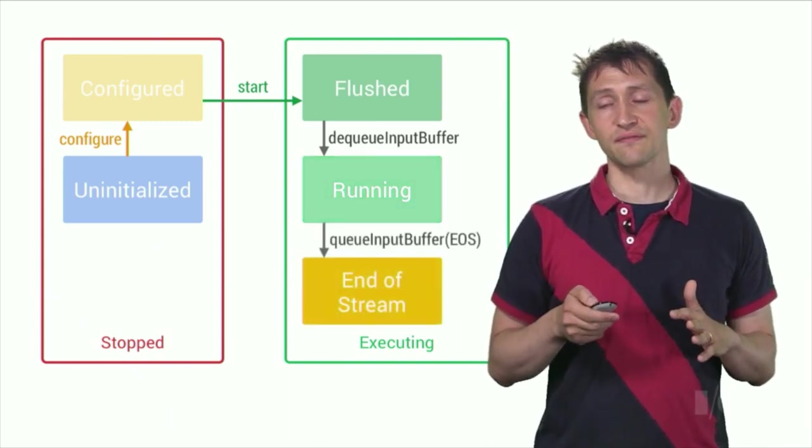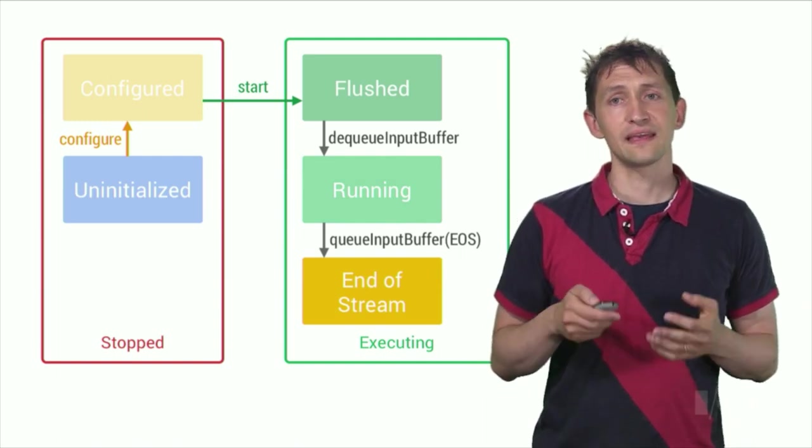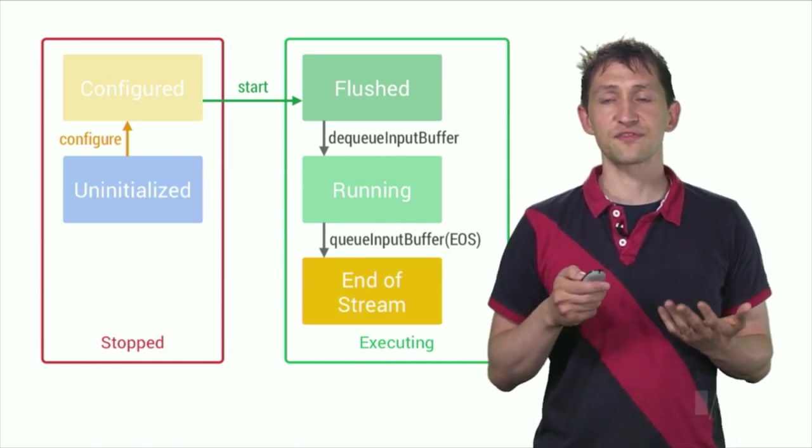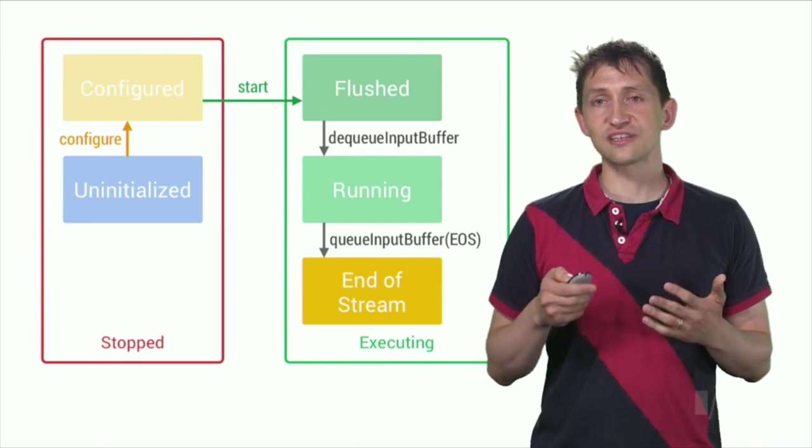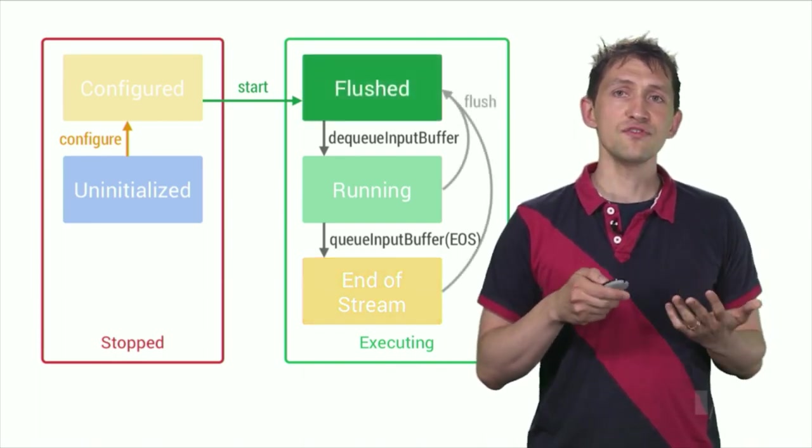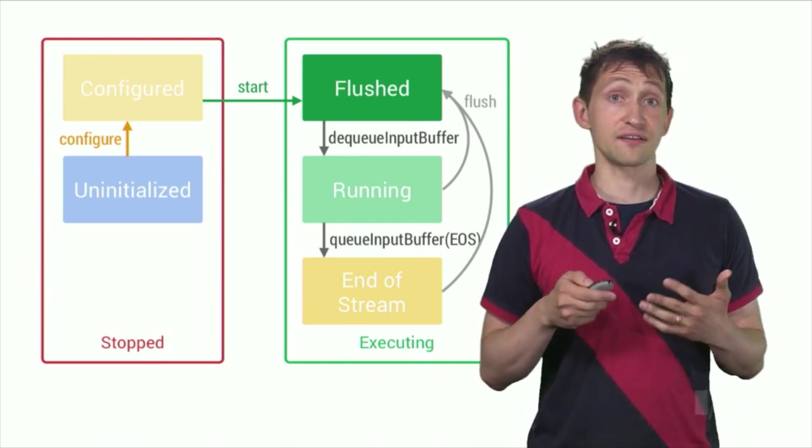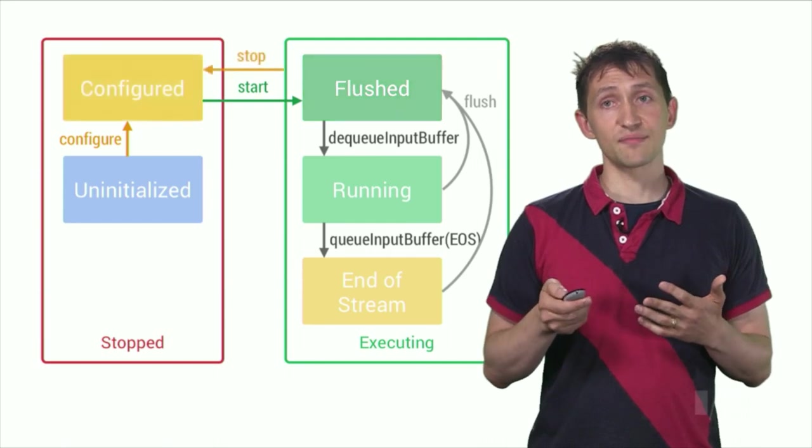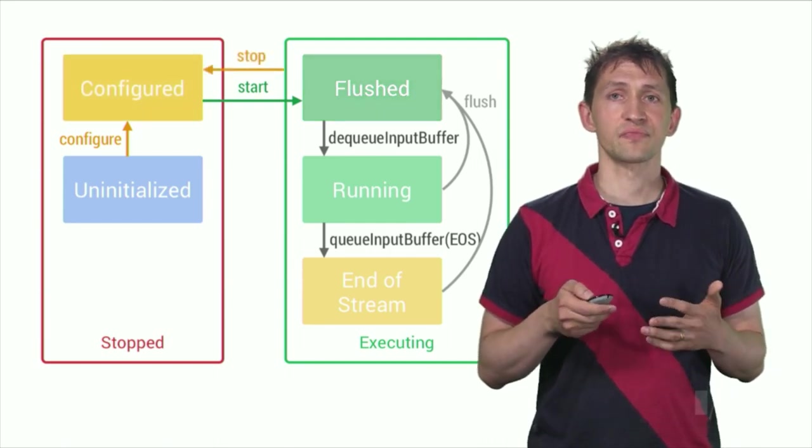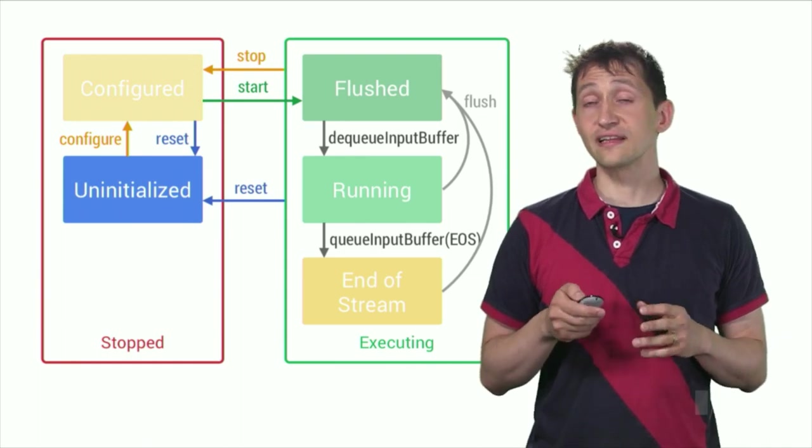If you queue an input buffer with the end of stream flag, the codec moves to the end of stream state. Here, it no longer accepts further input buffers, but still generates output until the end of stream buffer is reached. You can move back to the flush state from any of the executing states by calling flush, or call stop to go back to the configured state.